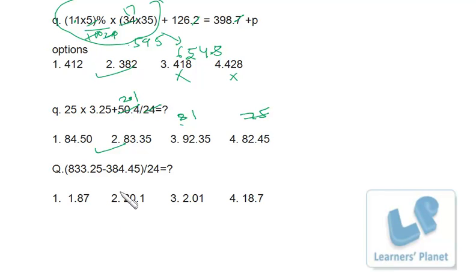Now this is really very simple: 833.25-384.45. Just make it 833 minus 380, either make it 4 or make it 3. 330 minus 8 is 5, so 450 divided by 24. Your answer must be less than 20, definitely, but much more than these two. So this is the only choice we have. No need to calculate further.